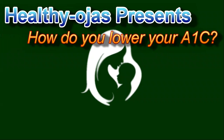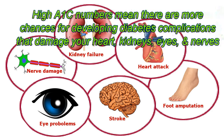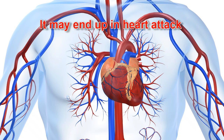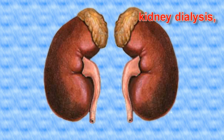Healthio presents this video on how to lower your A1c. High A1c numbers mean there are more chances of developing diabetes complications that damage your heart, kidneys, eyes, and nerves. It may result in heart attack, stroke, kidney dialysis, blindness, or amputation.